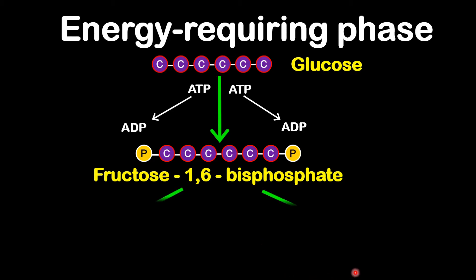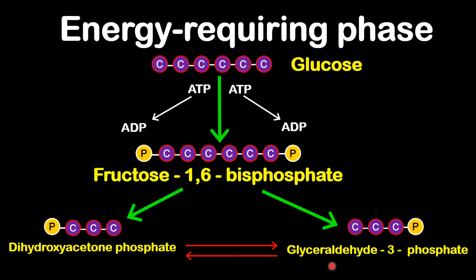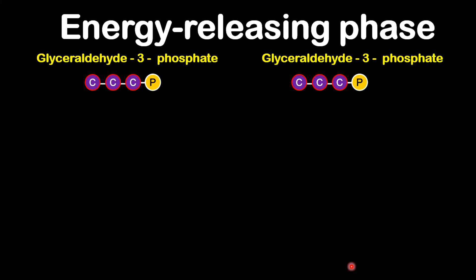Interestingly, fructose-1,6-bisphosphate will further break down into two sets of three-carbon molecules: one is called dihydroxyacetone phosphate and the other is glyceraldehyde-3-phosphate. The dihydroxyacetone phosphate will eventually be converted into glyceraldehyde-3-phosphate. Once the glyceraldehyde-3-phosphates are formed, they will undergo the last stage, called the energy-producing phase.